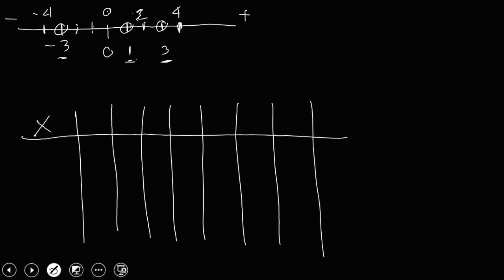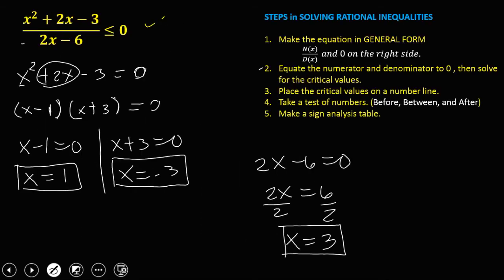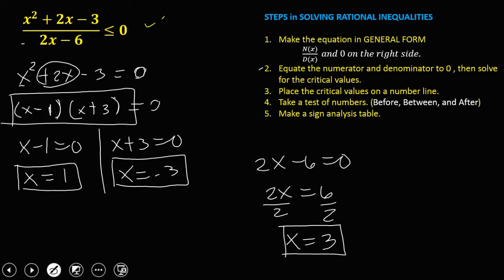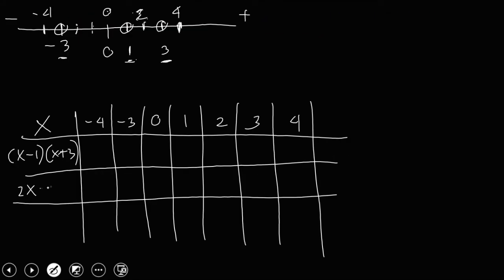In the sign analysis table, x values are: negative 4, negative 3, 0, 1, 2, 3, and 4. For the numerator, we use the factors x minus 1 and x plus 3. For the denominator, that's 2x minus 6. Substituting the critical values: if x equals negative 3, then negative 3 plus 3 is 0 — zero numerator gives 0. If x equals 1, then 1 minus 1 is 0 — zero numerator gives 0.